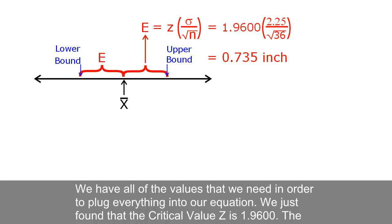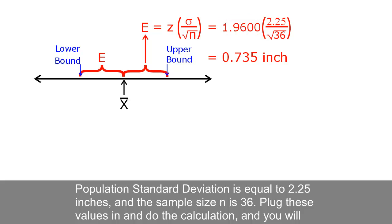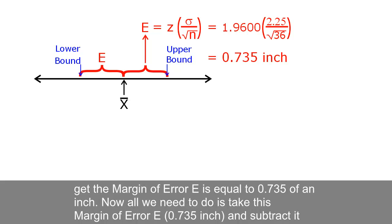We just found that the critical value z is 1.9600, the population standard deviation is equal to 2.25 inches, and the sample size n is 36. Plug these values in and do the calculation, and you will get the margin of error E is equal to 0.735 of an inch.